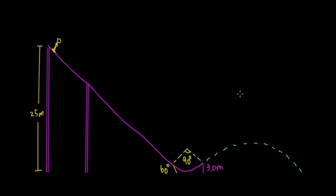There are two parts to this problem. The first part is the ramp, where we use the energy concept to solve it. The second part is after she leaves the ramp, which is the projectile motion, where we use the kinematic equation to solve.